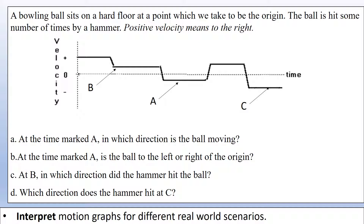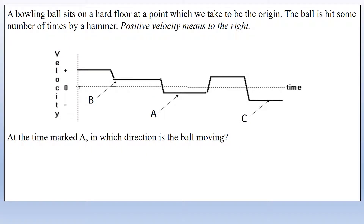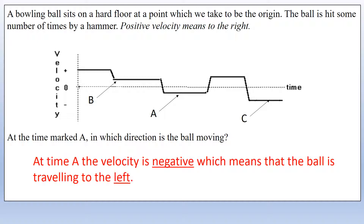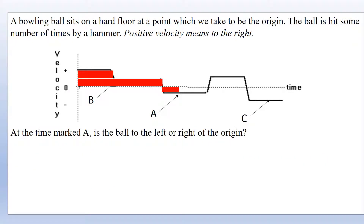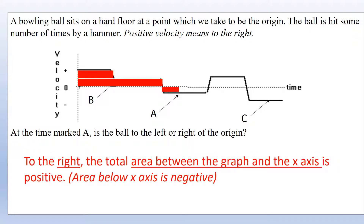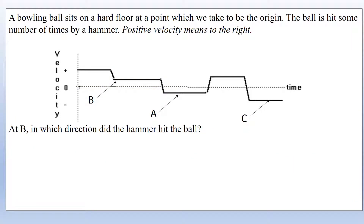At time A, the velocity is negative, which means the ball is traveling to the left. For the second question — is the ball to the left or right of the origin at time A — the change in displacement is the area under the velocity-time graph. The area above the x-axis is much greater than the area below, so the ball is displaced to the right, even though it's currently traveling left.